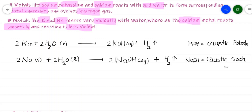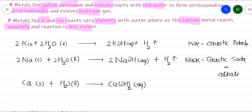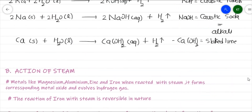Calcium metal in solid state reacts with water in liquid state to give calcium hydroxide — Ca(OH)₂ (aq) + H₂ (g). Calcium hydroxide is commonly known as slaked lime. Potassium and sodium react very violently, while calcium reacts a little less violently. These are the three metals that react with cold water.